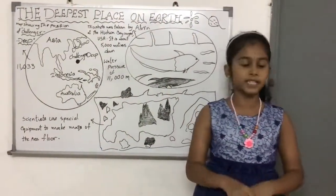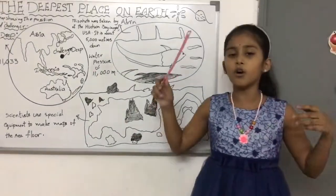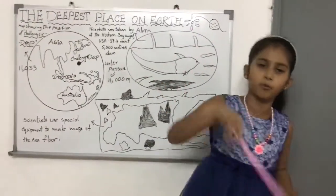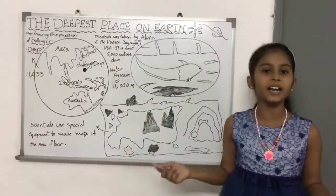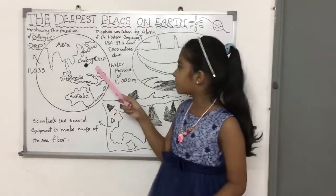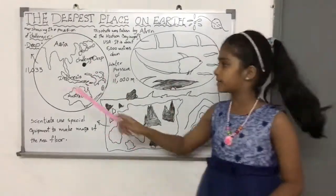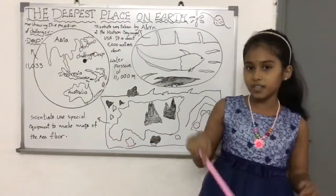Did you know oceans are not flat? There are enormous mountains and deep valleys. The deepest point on Earth is in the Mariana Trench under the Pacific Ocean. This place is called the Challenger Deep and it is 11,033 meters under the ocean surface.